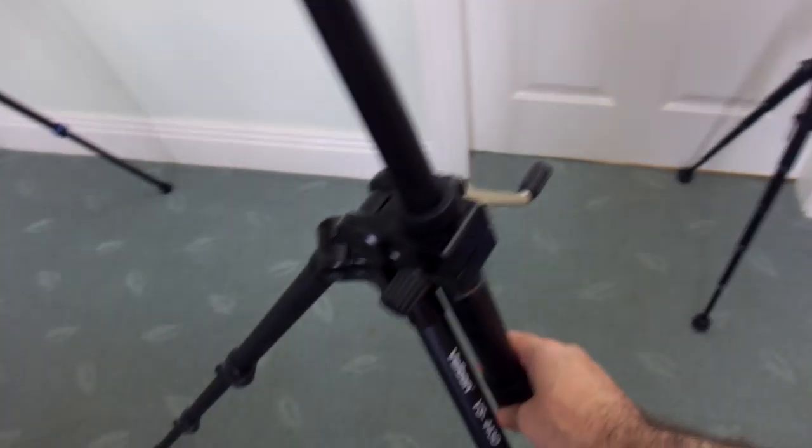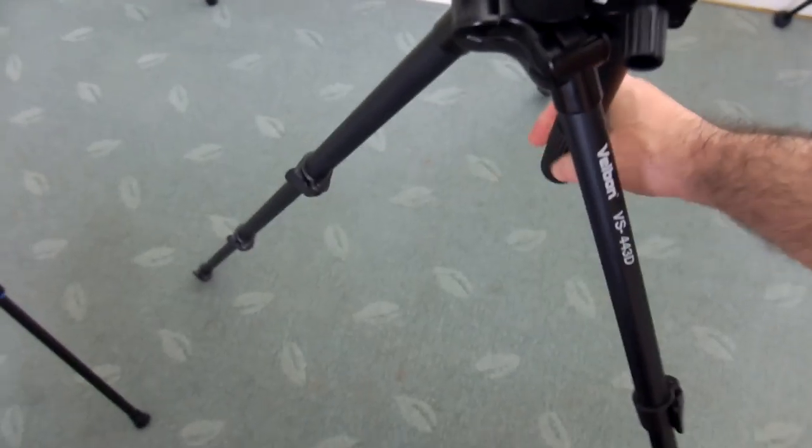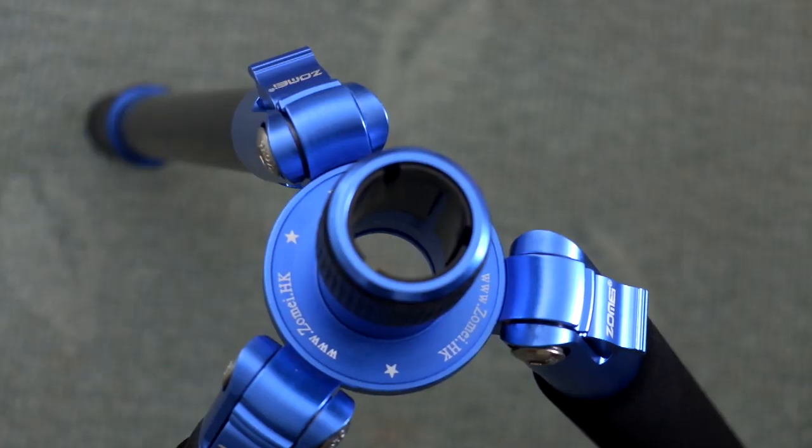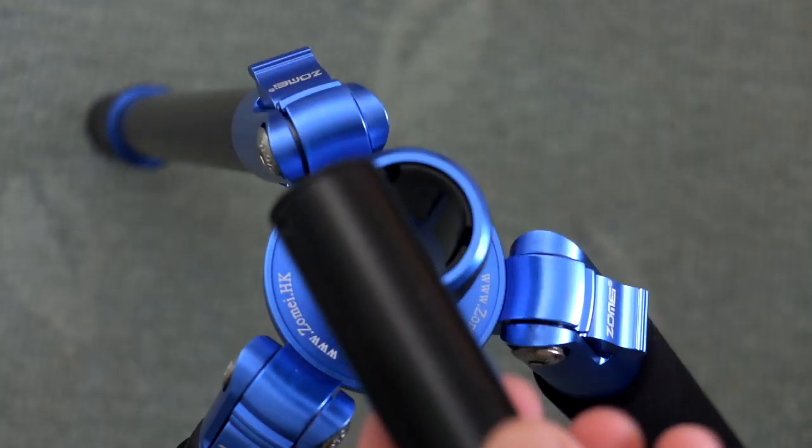The Z818C is really designed as a full-size but compact travel tripod. You can see I've removed the central column here. All of the blue parts here, there's a few different colors that you can get for this tripod, are aluminum, anodized aluminum.